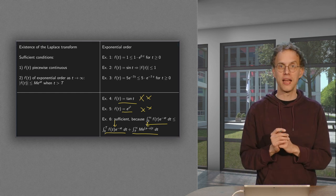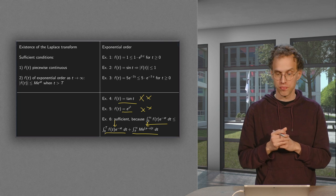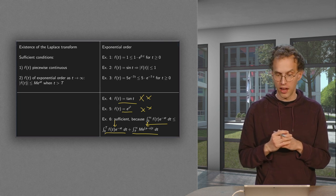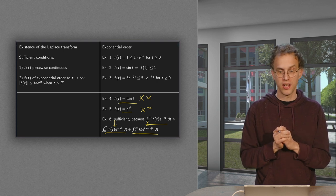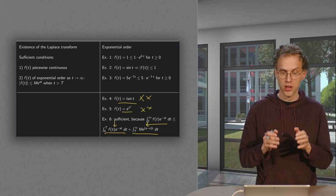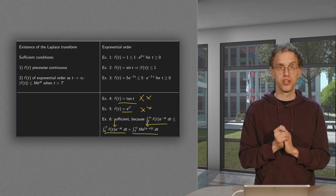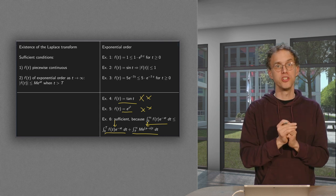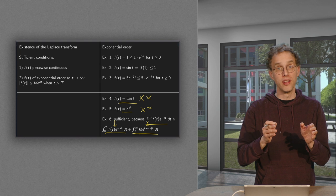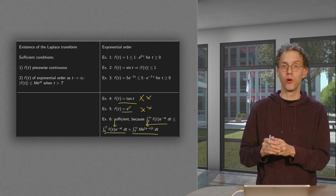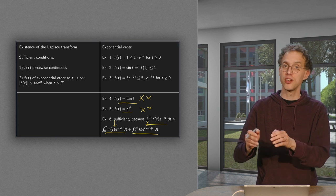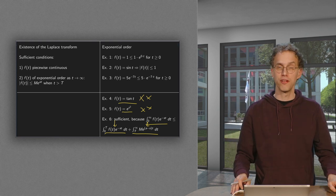And the second part works as well. Because you have an e to the power a minus s times t. So, for a suitable choice of a, this integral converges as well. So that is why these two conditions are sufficient. The piecewise continuity ensures the convergence of the integral on the first part. And the exponential order ensures the convergence of the integral on the second part up to infinity.